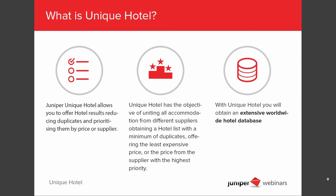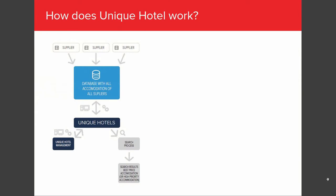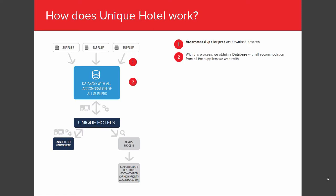With Junihotel, you will obtain an extensive worldwide hotel database. Once we know the definition, we are ready to see how it works. In this graph, we are going to identify each element to explain step by step how Junihotel works. Point one: Juniper downloads from the supplier all the information needed for the combination. The download period depends on each supplier, and Juniper tries to download frequently to get all the information as recent as possible. Point two: once the download process runs, we store this information in our database.